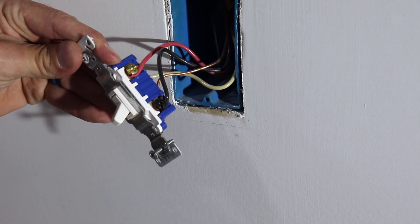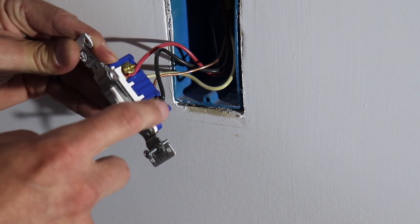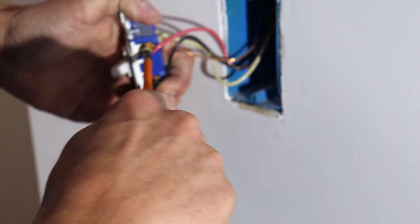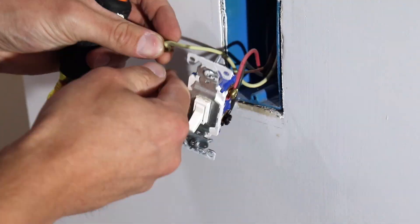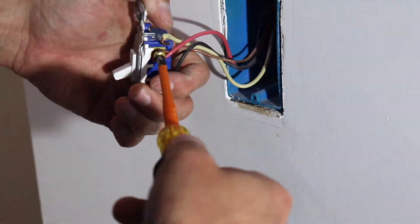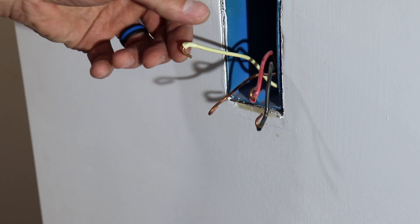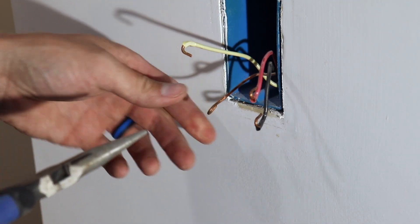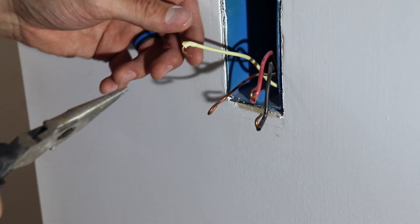So now that we know which wires go where, we can go ahead and disconnect these wires from the switch. Now I've got these wires off of the switch. What I'm going to do is just open up this half bend or this half circle, and that way I can connect it a little bit easier to my new switch.